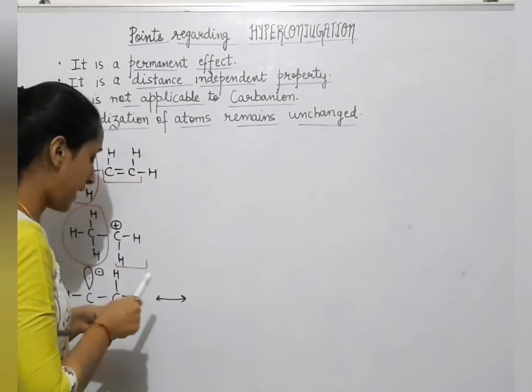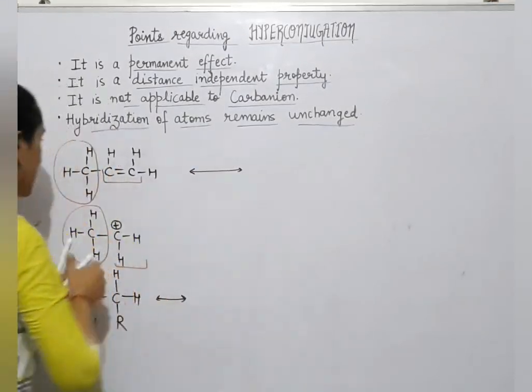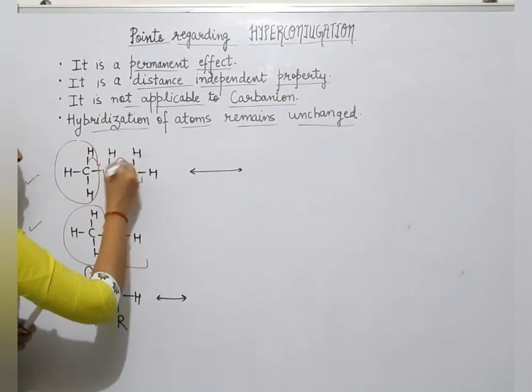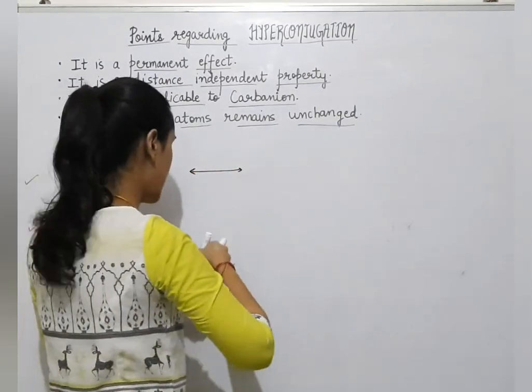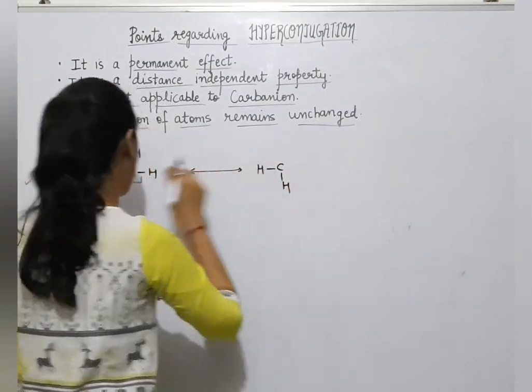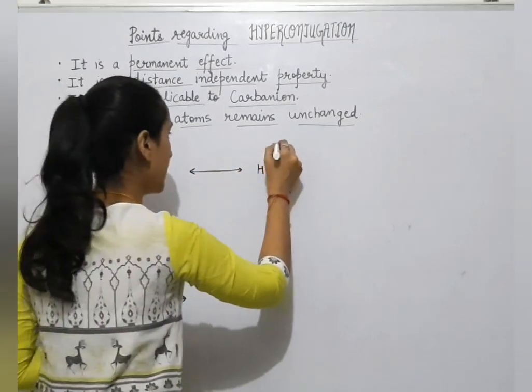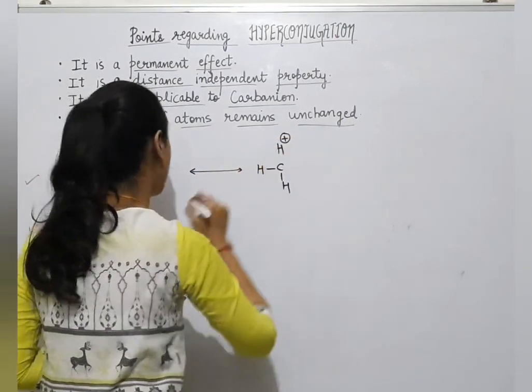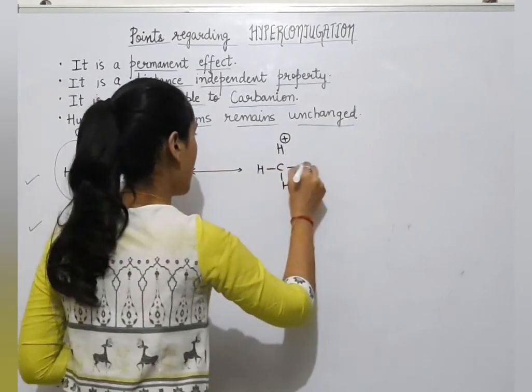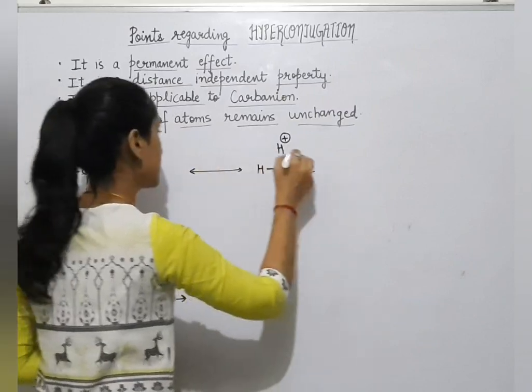If I have a resonating structure to draw, how do I make it? First I will transfer this sigma electron and then the electrons will shift. This hydrogen becomes a proton and then the electron becomes a double bond.